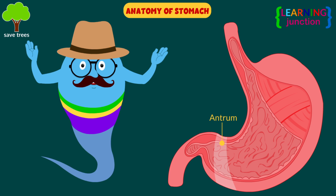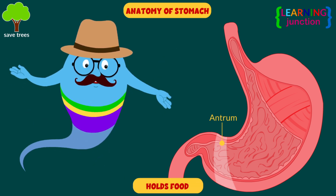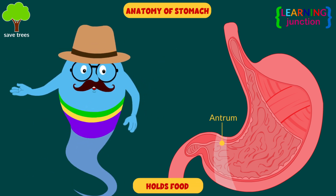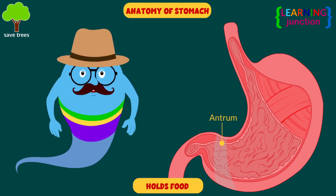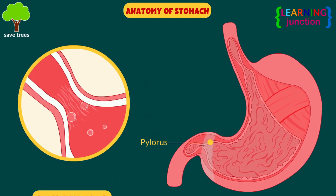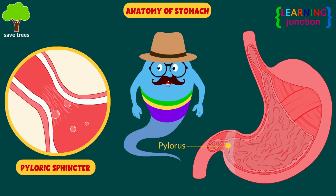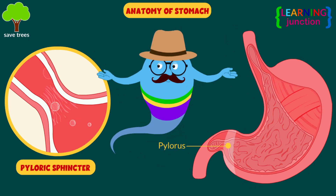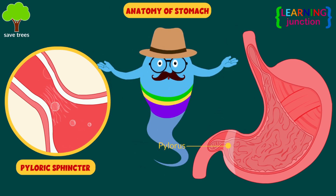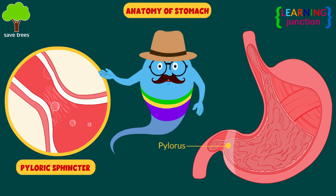The antrum — it lies below the corpus and holds food until your stomach is ready to send it to the small intestine. The pylorus — it's the bottom part of your stomach, which includes a pyloric sphincter. This band of tissue controls when and how your stomach contents move to your small intestine.